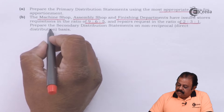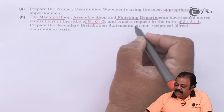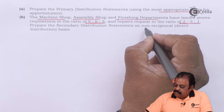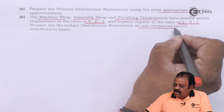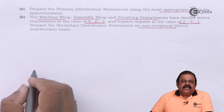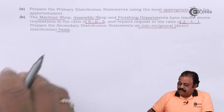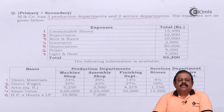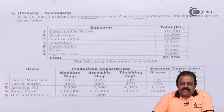We are required to prepare the secondary distribution statement. The primary distribution is on a non-reciprocal, that is, direct distribution basis. We are required to prepare first the statement of primary distribution.